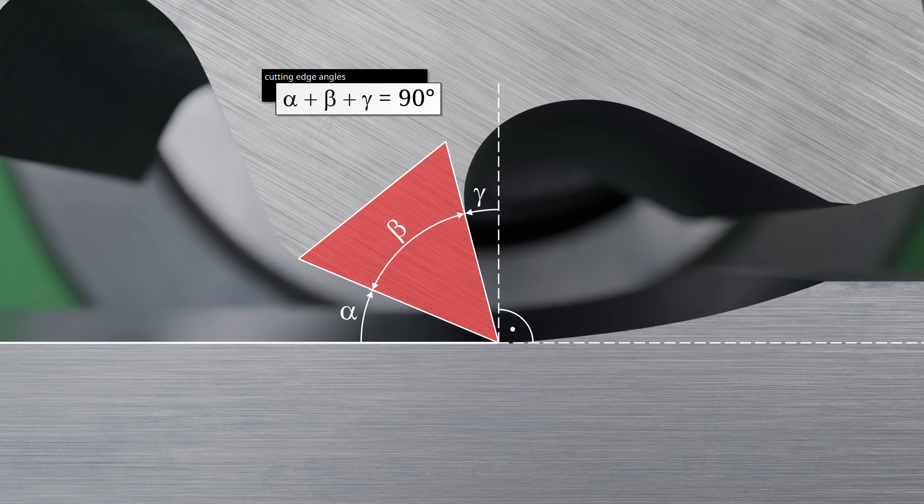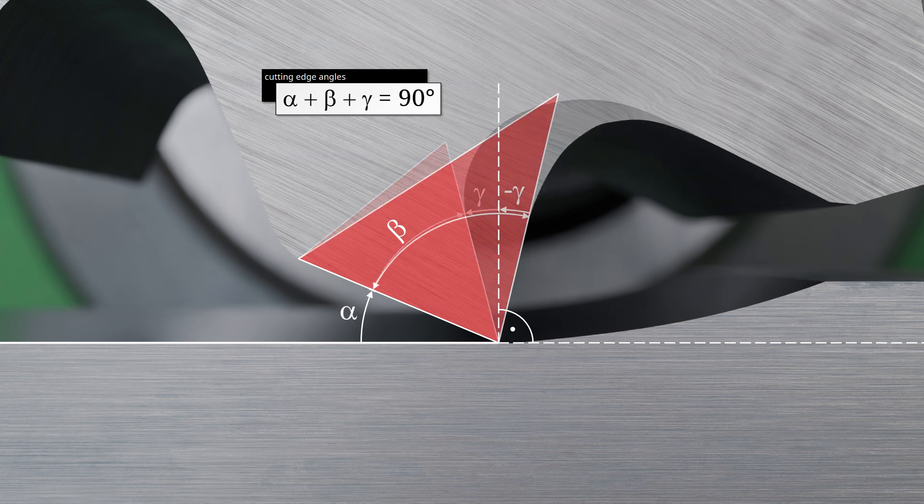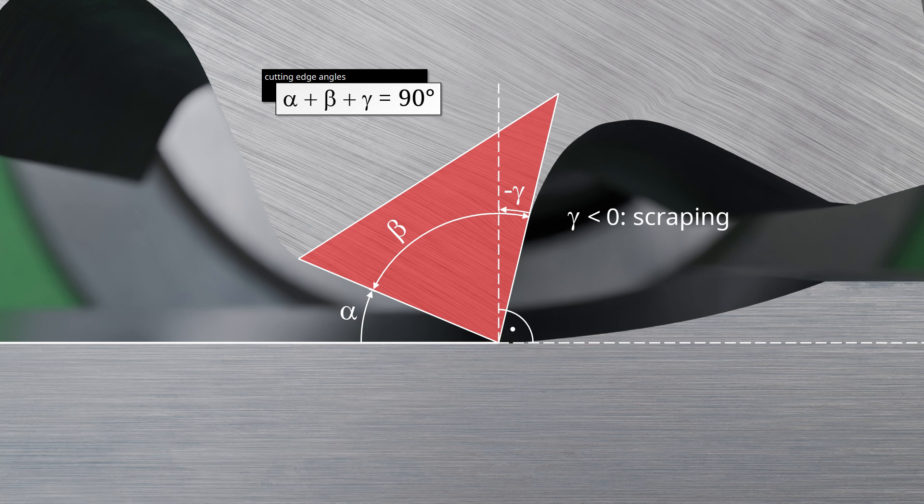Depending on the size of the wedge angle, the rake face can extend beyond the perpendicular to the cutting surface. In this case, the rake angle becomes mathematically negative. This no longer results in a cutting action, but rather a scraping effect.